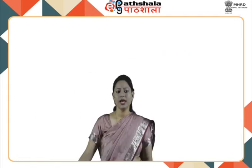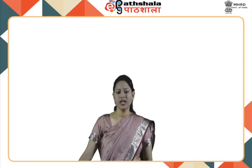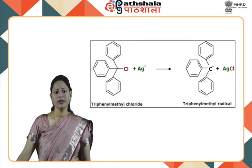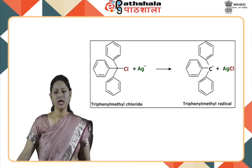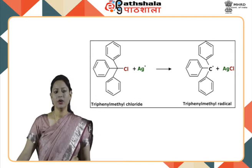Persistent free radicals have a long lifetime and they are resistant to dimerization, disproportionation, and other routes to self-annihilation, though they may not be very stable. The triphenylmethyl radical was the first radical to be discovered by Gomberg in 1900. Although it took 30 more years to know what he had made, it can be generated by the treatment of triphenylmethyl chloride or trityl chloride with silver.